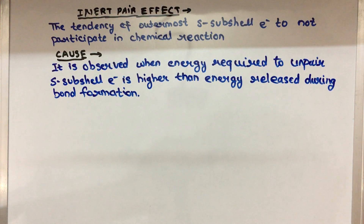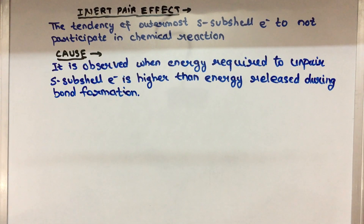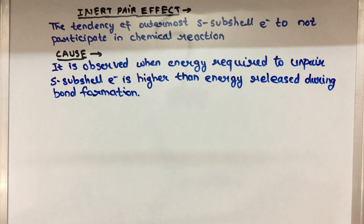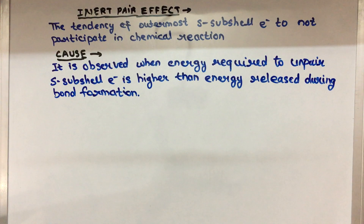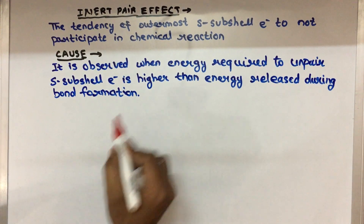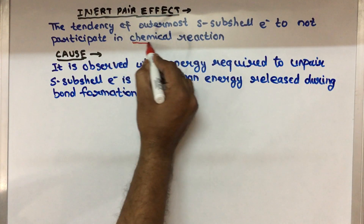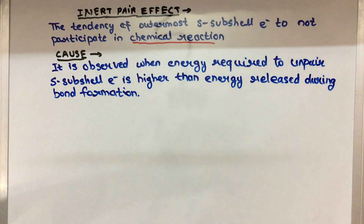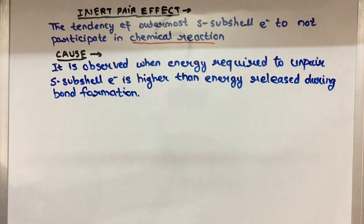14, 15, 16 — in all groups of elements, the outermost configuration is ns2 and np1 to np6. Now, what happens if the electrons pair and do not participate in the reaction? This tendency is called the Inert Pair Effect — it means those electrons don't participate in the reaction.